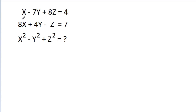In this video, we are given that x - 7y + 8g = 4 and 8x + 4y - g = 7, and we have to find the value of x² - y² + g².